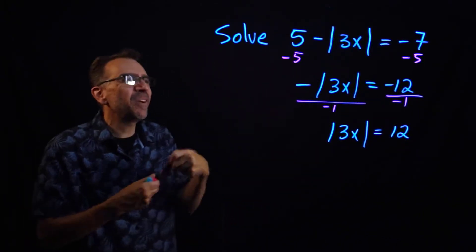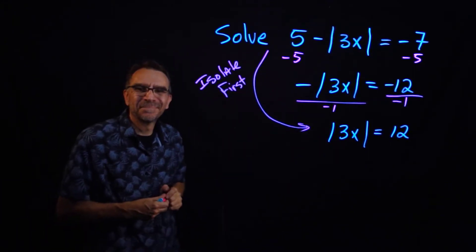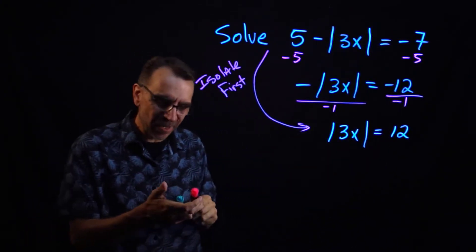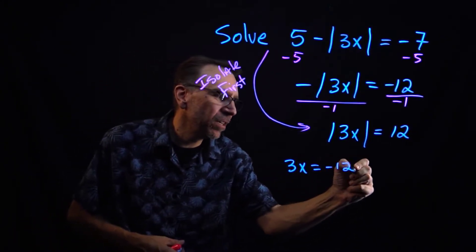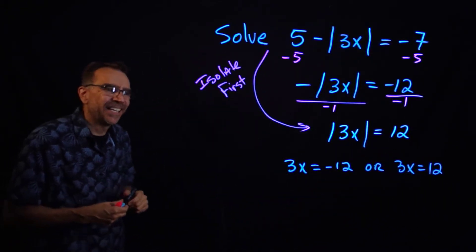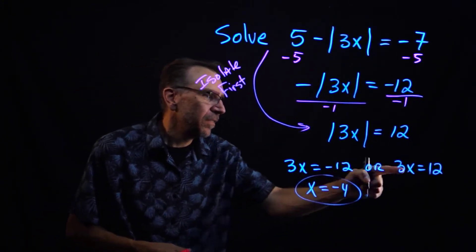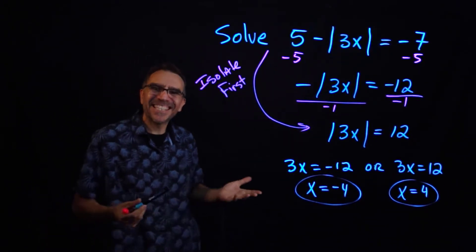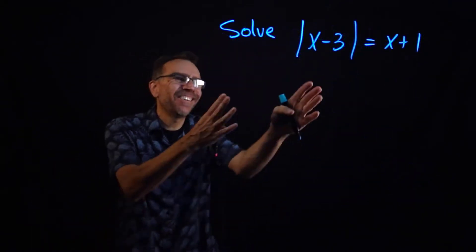Once the absolute value is isolated, we set the argument equal to plus or minus that number. So we get 3x equals negative 12 or 3x equals positive 12. Dividing by 3 gives x equals negative 4, and dividing by 3 on the other gives x equals positive 4. You can plug those back into the original to verify.